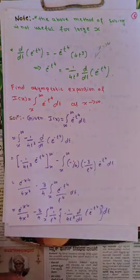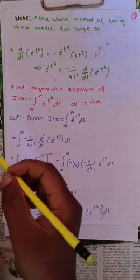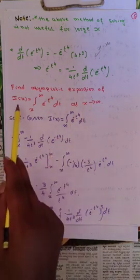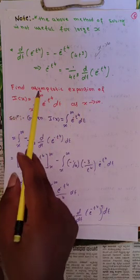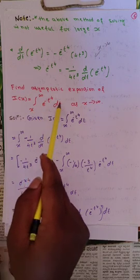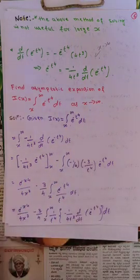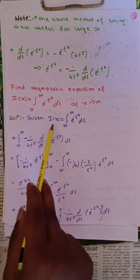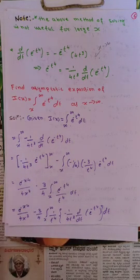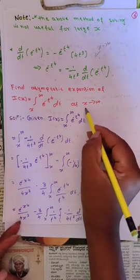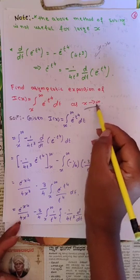Now coming to the problem: find the asymptotic expansion of I(x) as x tends to infinity, where I(x) equals the integral from x to infinity of e^(-t^4) dt, as x tends to infinity. First, collect the data: given I(x) equals this integral, and here x tends to infinity.